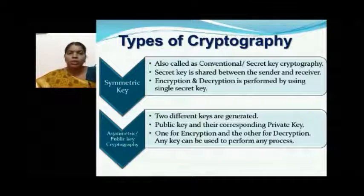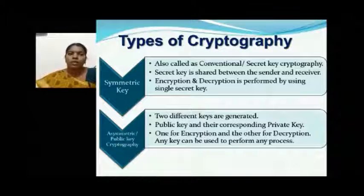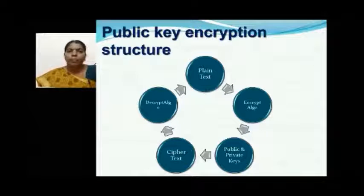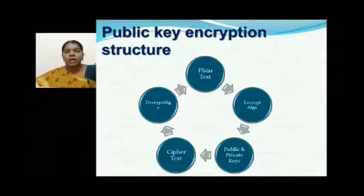The next type is asymmetric cryptography, where two different keys are used for encryption and decryption: a public key and a private key — one for encryption and the other for decryption. This figure shows all the elements used in public key encryption: plain text, encryption algorithm, public and private keys, ciphertext, and decryption algorithm.